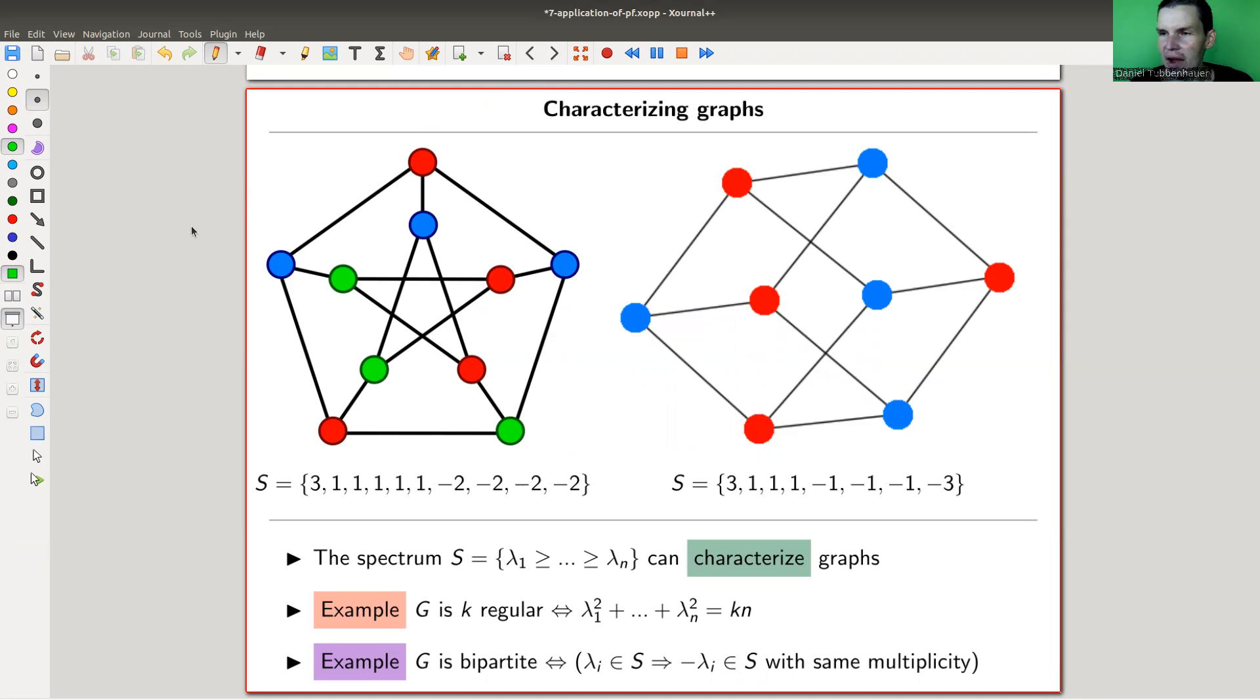So here I have two graphs and I've marked the spectrum underneath them. That's the slogan for this talk. I will always have a graph and a spectrum. So here this graph has 3 and five times 1 and then four times minus 2. Three, one, minus one, minus three. I will always have the spectrum ordered exactly this way. So the biggest one to the left and then it successively gets smaller. That was just setting up notation and now we can go.